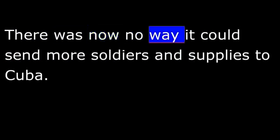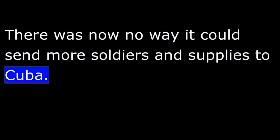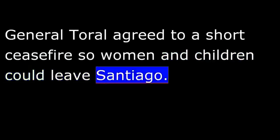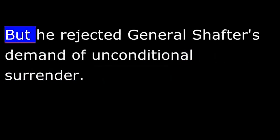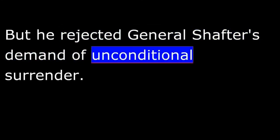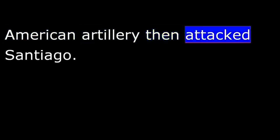There was now no way Spain could send more soldiers and supplies to Cuba. General Torral agreed to a short ceasefire so women and children could leave Santiago. But he rejected General Shafter's demand of unconditional surrender. American artillery then attacked Santiago. General Torral defended the city as best he could. Finally, on July 17th, he surrendered. The United States promised to send all his soldiers back to Spain.